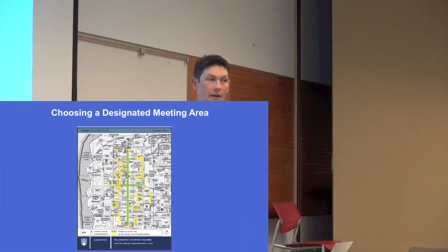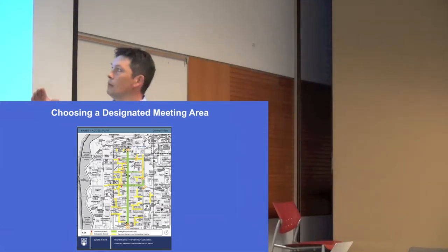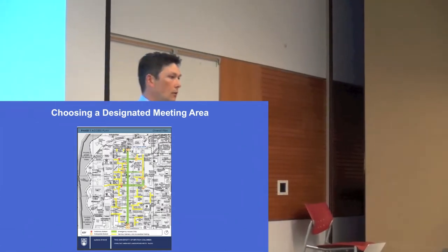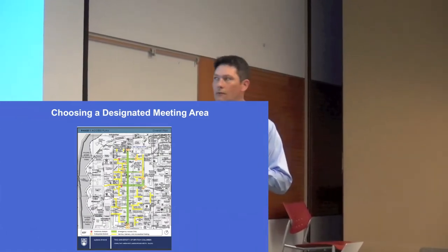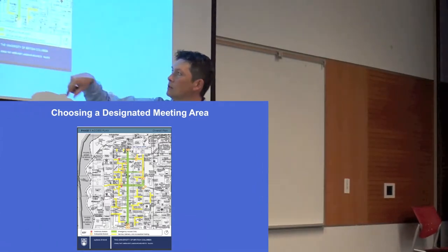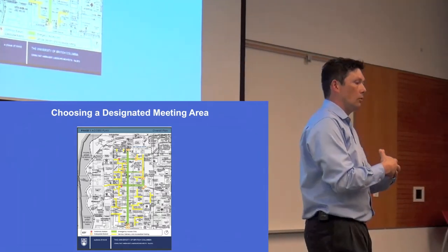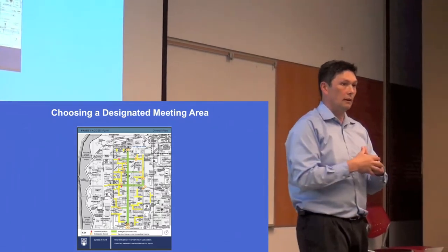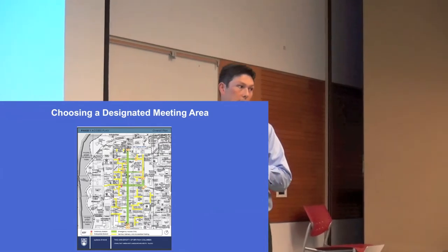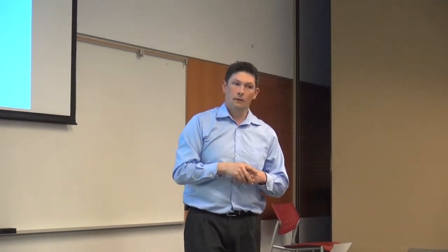Regarding the designated meeting area: the fire rescue service will come in along the main mall. All along the main mall is where they're coming up to deal with the incident. So stay out of the way — move across and away from the building so you're out of the path of the fire department. Don, you could include this campus map of emergency service access routes in your plan as well.